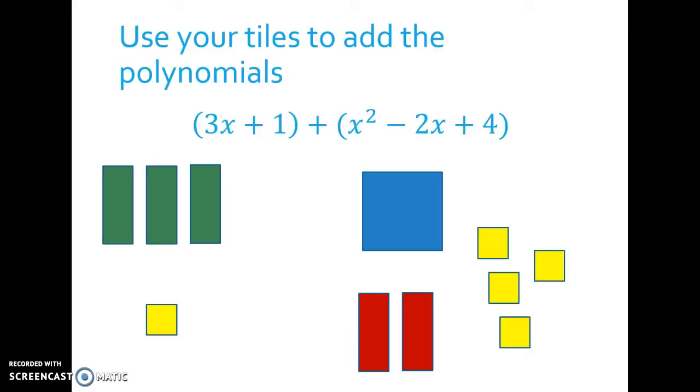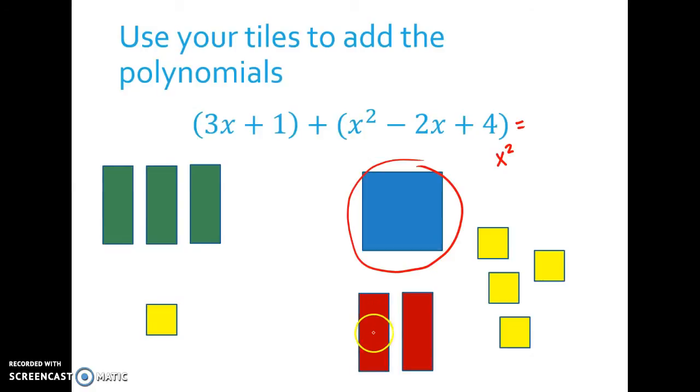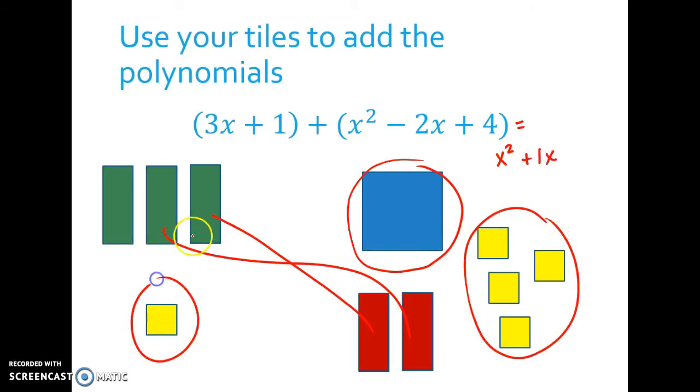And then I look for like terms. When we add polynomials, we like to put the answer in what's called standard form, which means we put the biggest exponent first. So I have one of these x squared blocks, so my answer would be x squared. And then these blocks will cancel, so I'll just have plus one x block. And then I have four plus one, so I would have five ones.